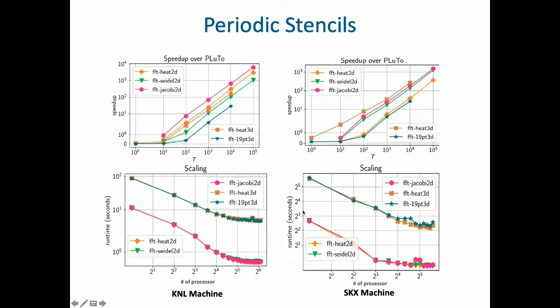Here, we present periodic stencil computation performance compared with Pluto library. The columns represent the type of machine architecture. The left column is for KNL and the right column displays SKX machine architecture. For each of the machine architectures, we have plots of the speed-up over Pluto and scaling performance.